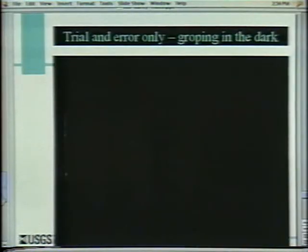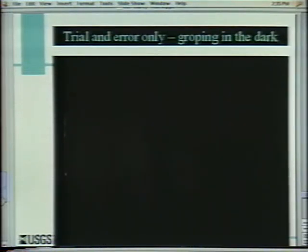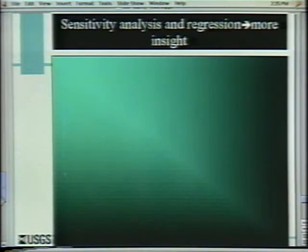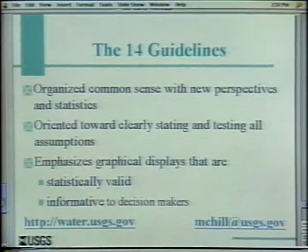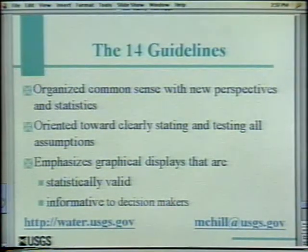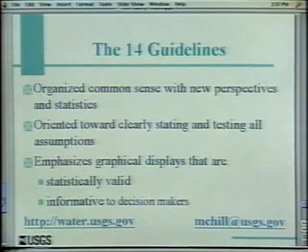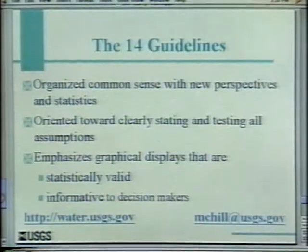How does this relate to what we've done in the past? Generally, people use trial and error — I think of trial and error as groping in the dark. If I turned out all the lights here, I could grope around and figure out there were long tables, chairs, and carpet on the floor. Using the methods I'm talking about isn't like turning on bright lights — it's more like turning on a nightlight. You can see a little bit better. I can guarantee it's a lot more fun to do calibration with this kind of analysis instead of just trial and error. I've talked to you about 14 guidelines — I think of them as organized common sense with some new perspectives and statistics.